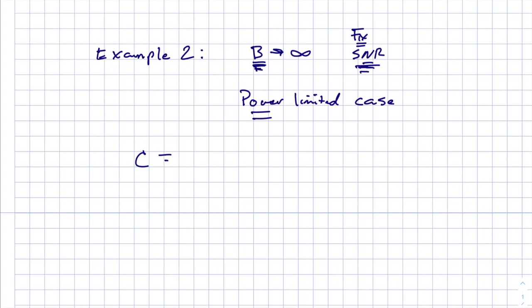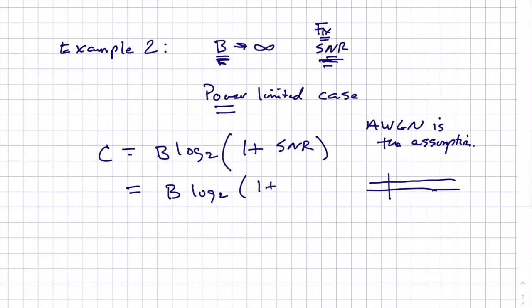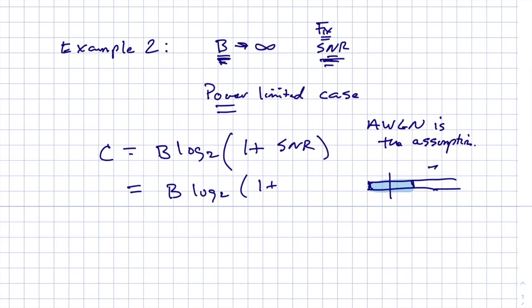So we know the channel capacity result. It's B, and then log base two of one plus the signal-to-noise ratio. But I'm going to write the signal-to-noise ratio where it's explicitly shown that it's a function of the bandwidth. So we're assuming additive white Gaussian noise is the assumption. We've talked about this a little bit, that if you have the power spectral density, you look at the bandwidth of the signal. And over, if it's a baseband signal, over a certain bandwidth is where you're communicating. This power spectral density height would be n zero. And so the total noise is going to be the signal power over n zero times B, where B is the bandwidth.